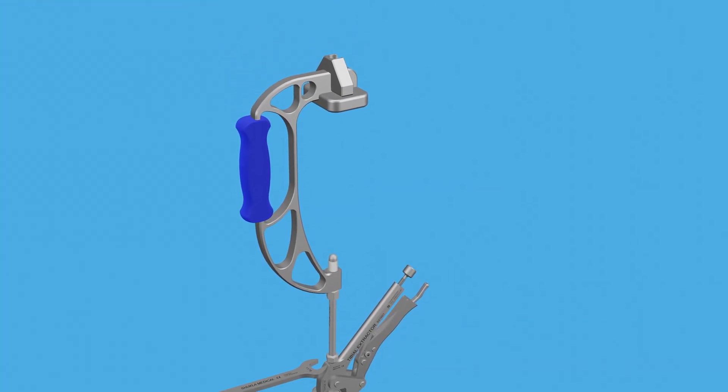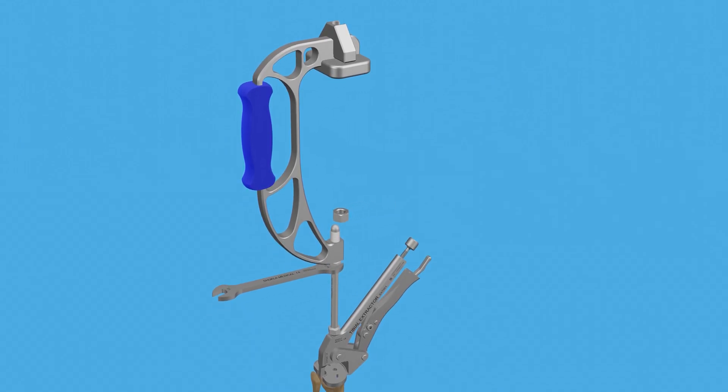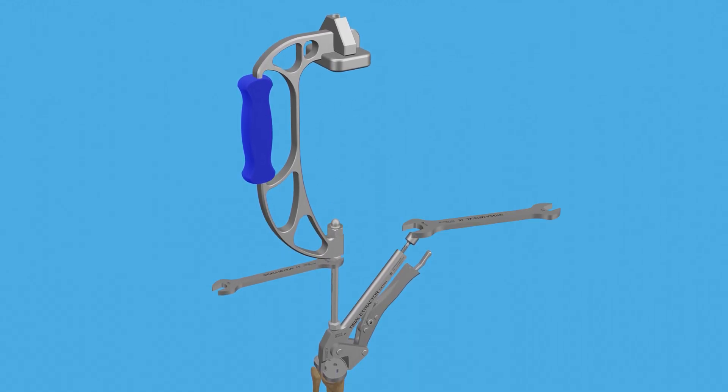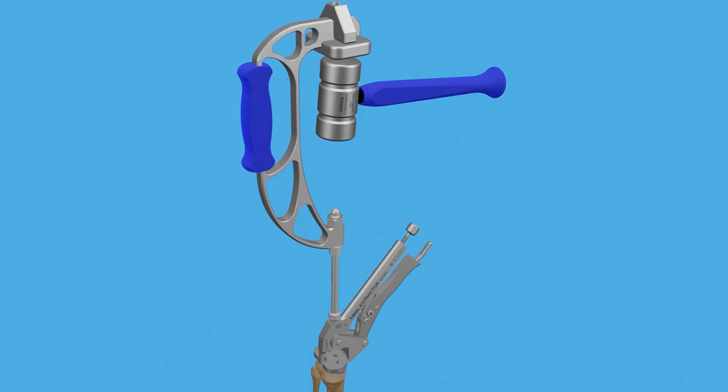Attach the strike plate frame to the rod. Secure the hex nut using a wrench. Extract the implant by striking the strike plate frame with the mallet, ensuring the impact is in line with the implant.